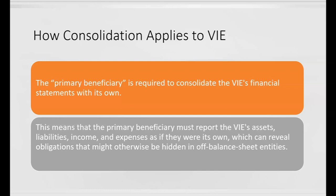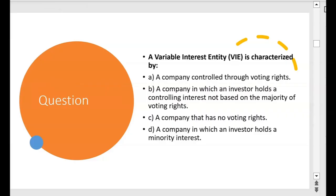How does consolidation apply to all this? The primary beneficiary is required to consolidate the variable interest entity's financial statements with its own. This means that the primary beneficiary must report the VIE's assets, liabilities, income, and expenses as if they were its own, which can reveal obligations that might otherwise be hidden in off-balance-sheet entities.